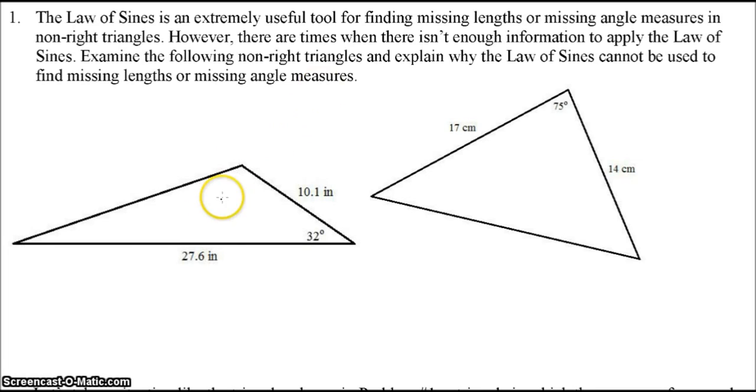Let's see, so if we tried to use the Law of Sines here to find, say, this side, x over sine of 32 equals 27.6 over sine of a question mark. We don't know either of these other angles here, so we cannot use the Law of Sines. Yeah, same thing with this triangle.